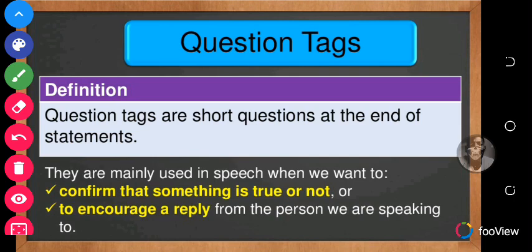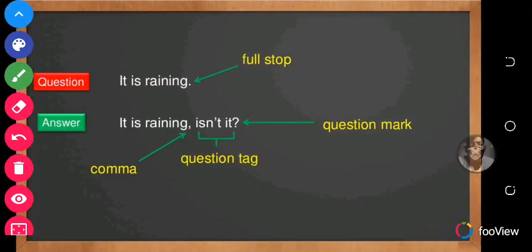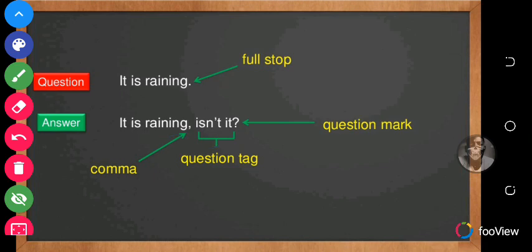Examples of question tags: Aren't you? Isn't she? Now let's look at the form question tags take. Every question tag comes after a statement. Example: 'It is raining' — isn't it? So 'it is raining' is the statement and the question tag is 'isn't it?' At the end of every question tag there is a question mark, and before a question tag there is a comma.